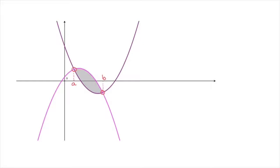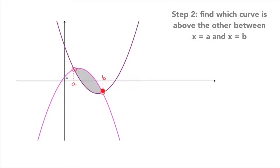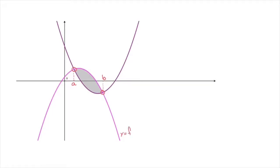The second thing we'll always have to look into is which of the two curves is above the other between these two values of x. Looking at this graph, we can see that this pink curve is the one which is above the other. Let's say that pink curve has equation y equals f of x, and the purple curve has equation y equals g of x.